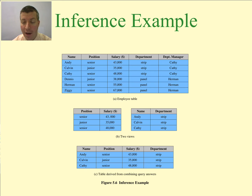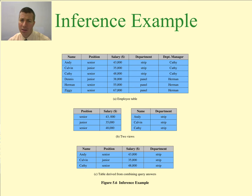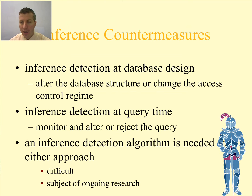If somebody realizes that the views are in the same order as the rows in the original table, they can push those two views together and figure out that Andy is making $43,000 as a salary. It just takes a little bit of intuition. That is why it is called inference — you can deduce more information even though you were not authorized to do so in the first place.